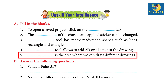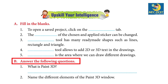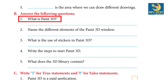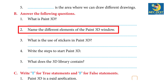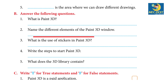5. — is the area where we can draw different drawings — Answer: Canvas. B — Answer the following questions: 1. What is Paint 3D? Answer: Paint 3D is a free application with the addition of creating and editing 3D images in a paint program. 2. Name the different elements of the Paint 3D window. Answer: The Paint 3D window has elements like Menu, Brushes, 2D Shapes, 3D Shapes, Stickers, Text Tool, 3D Library, and Canvas.